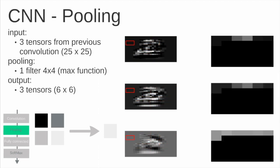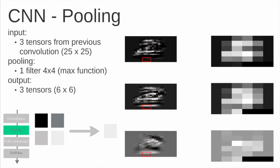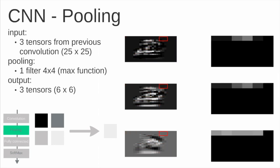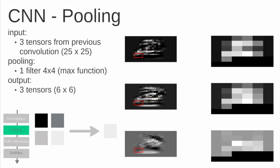We have three input tensors, and the output will have also three tensors. But the size of these tensors is different because we apply the pooling.